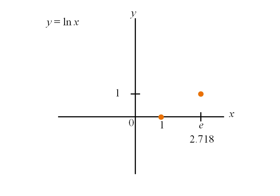Remembering that e rounded is 2.718. A third point of note is when x is 1 over e and y is negative 1.